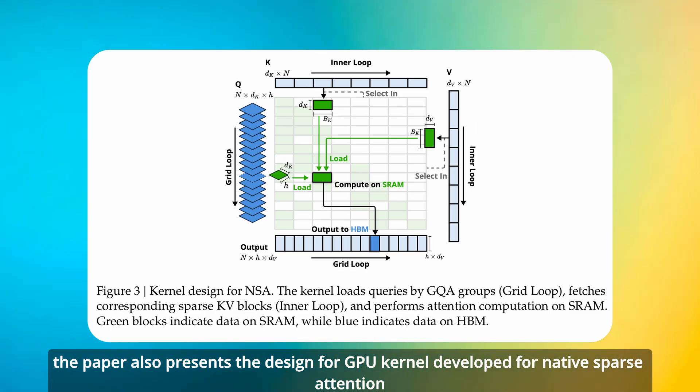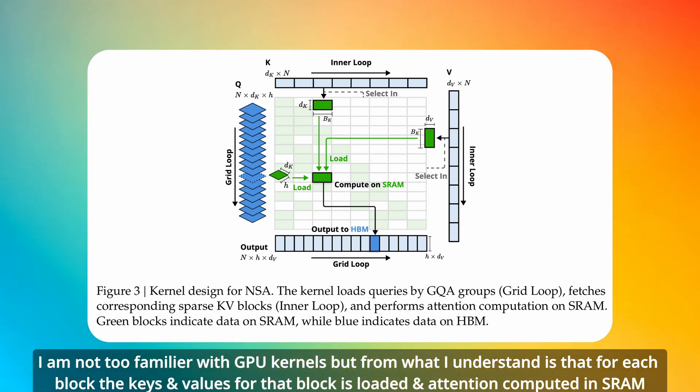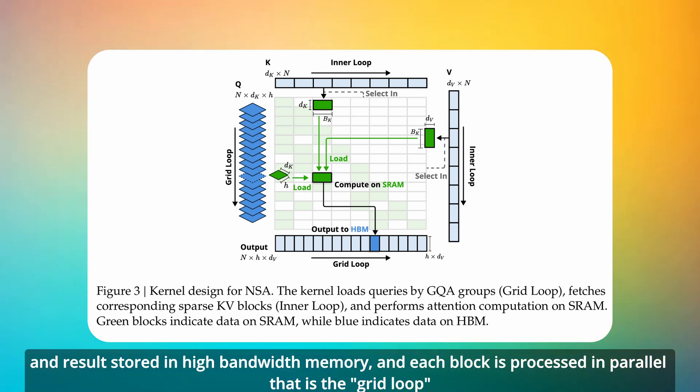The paper also presents the design for GPU kernels developed for native sparse attention. I am not too familiar with GPU kernels, but from what I understand, for each block, the keys and values for that block are loaded and attention computed in SRAM. Results are stored in high bandwidth memory, and each block is processed in parallel. That is the grid loop.